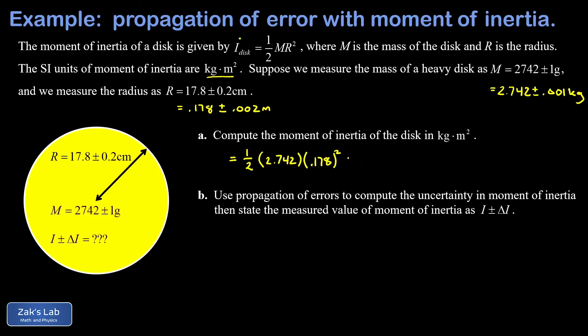When we run the numbers on this we get 0.0434—I'll keep a little extra precision, there's an extra four there—kilogram meters squared. Now part B is the real meat of the problem.